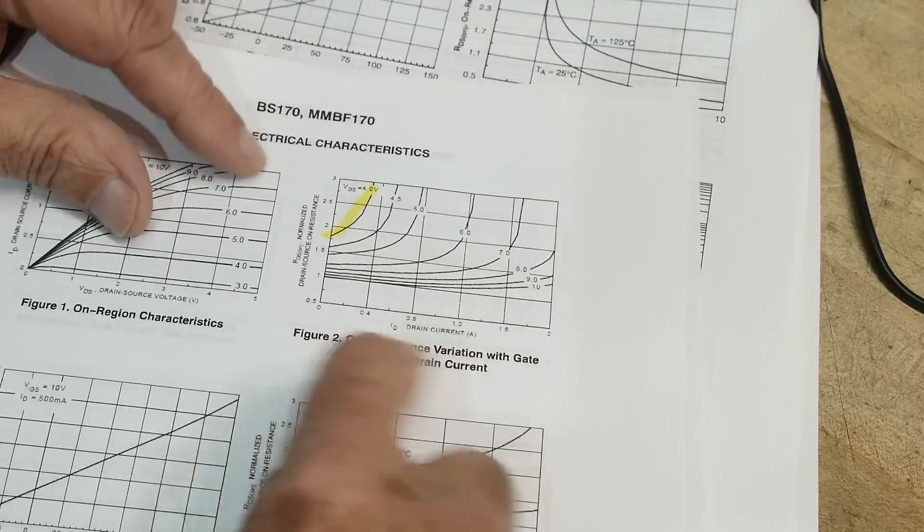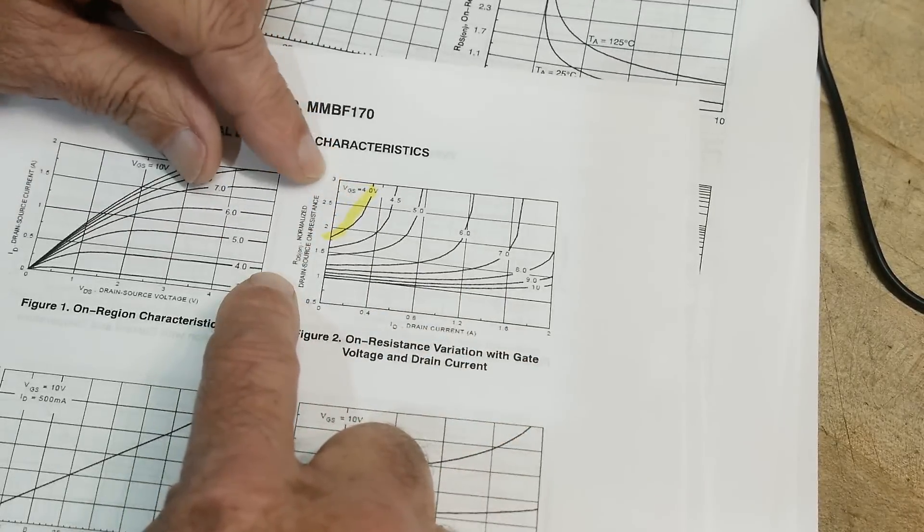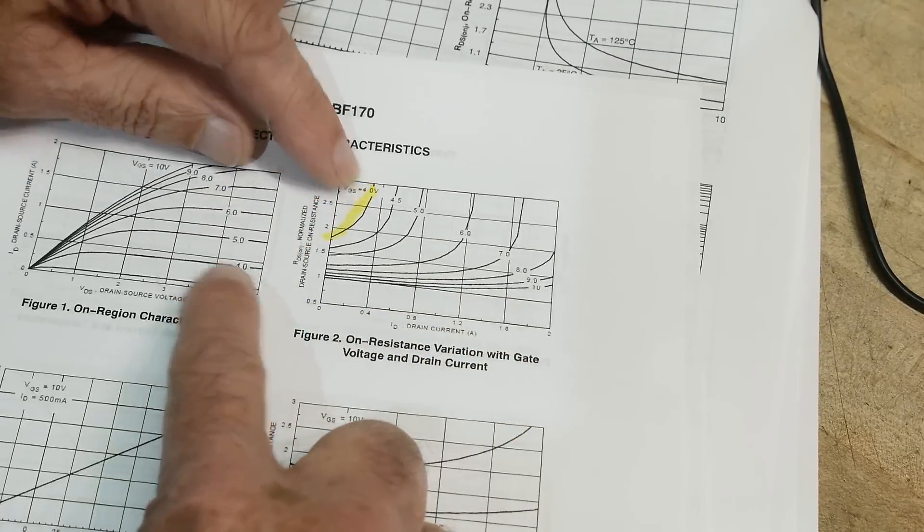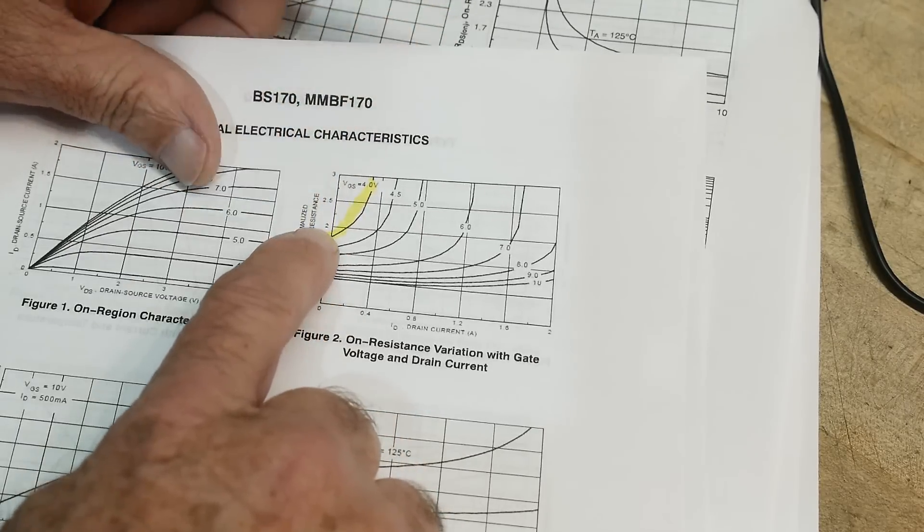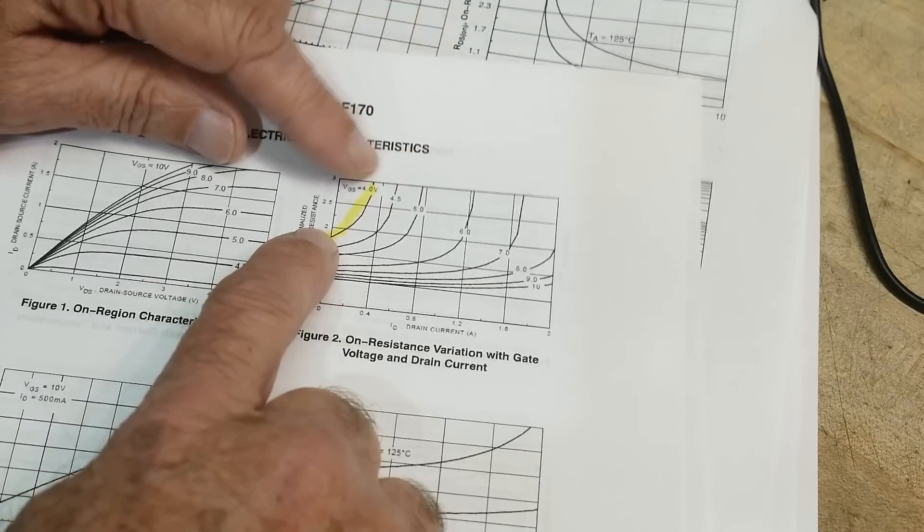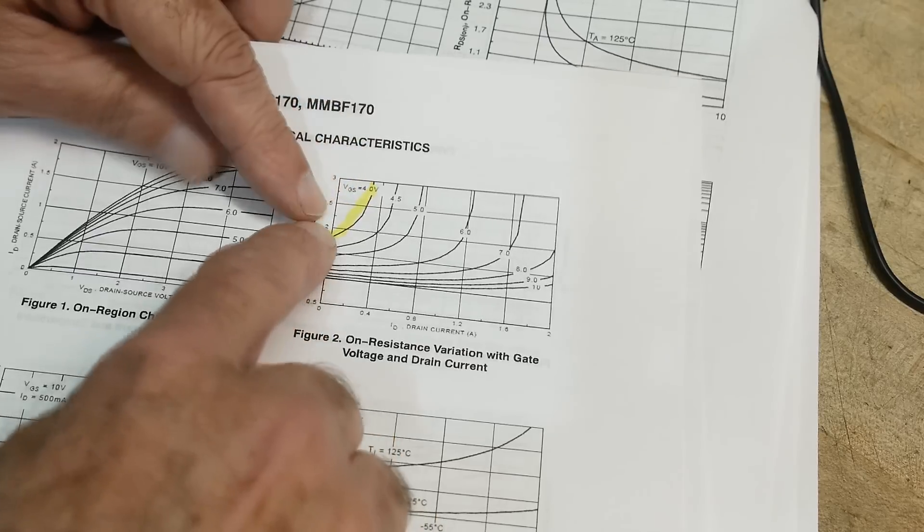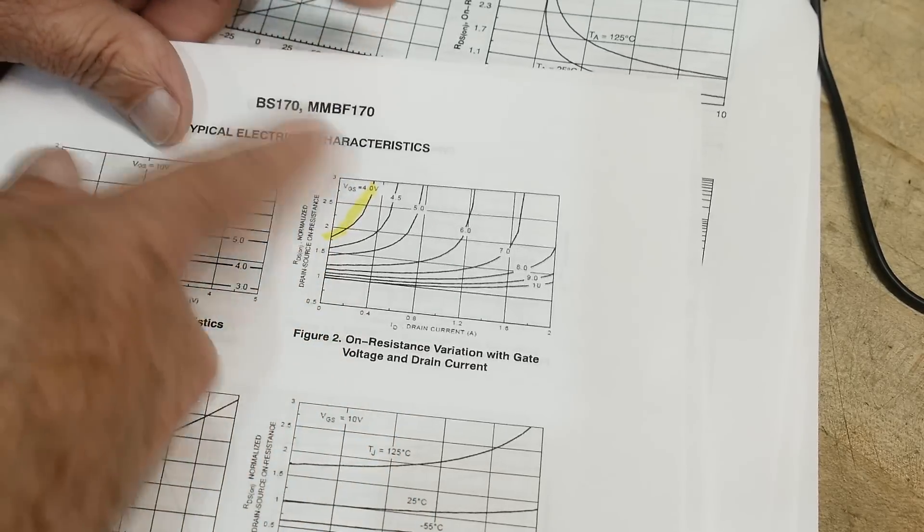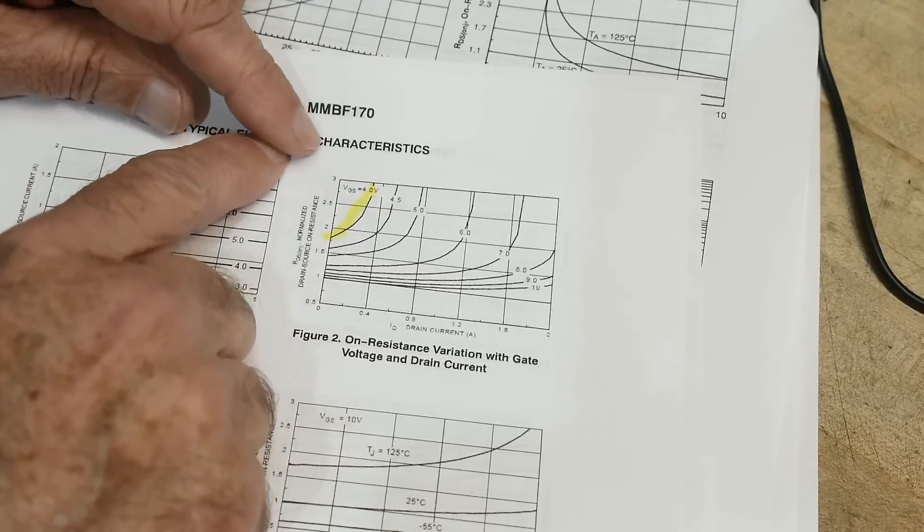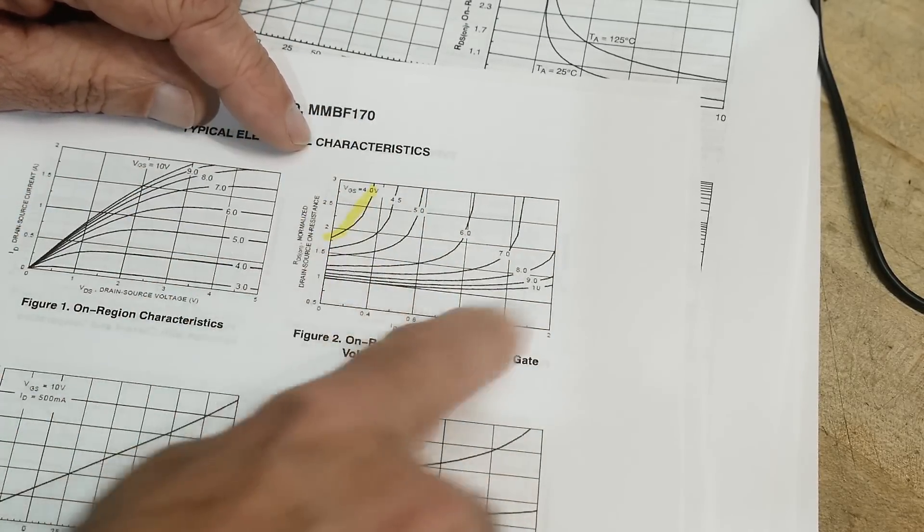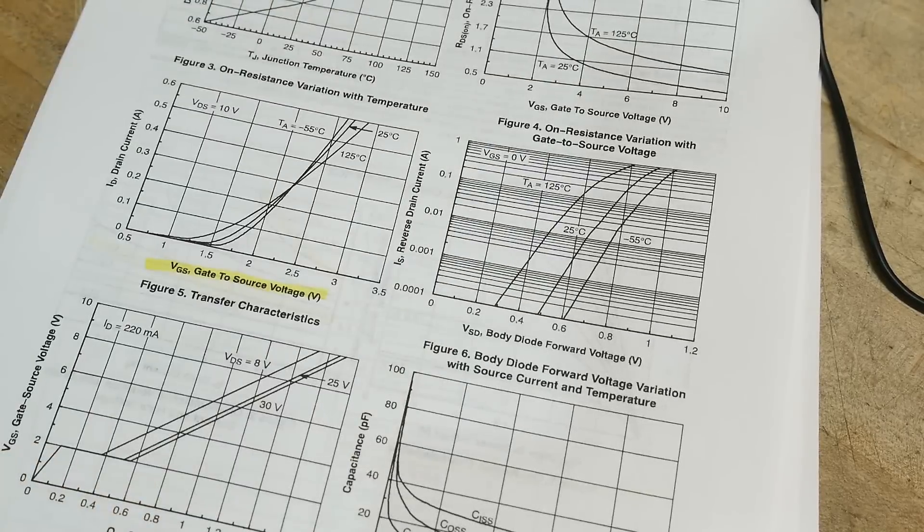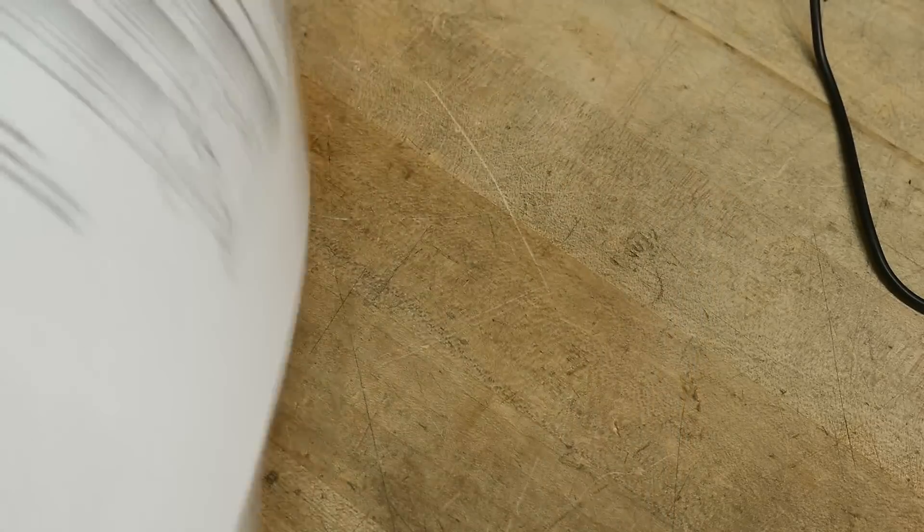Well, then you have to kind of look at some data sheet curves. And here we go. So they don't give us 2.6, they give us 4 volts. At 4 volts, we're up here around three ohms. But what about 2.6? It's kind of like off the map. We're really not quite sure how good of a conductor it is at 2.5, 2.6 volts. It really doesn't tell us. What about this part here that I claim is a little bit better?